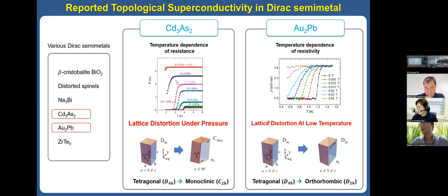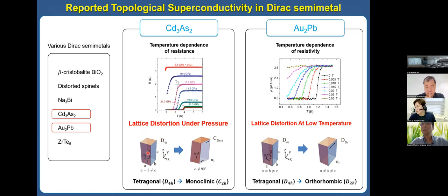Interestingly, in the Au₂Pb system at higher temperature, the system is tetragonal and shows Dirac semimetal behavior. But at lower temperature, it is elongated along one direction and becomes orthorhombic, and then it shows superconductivity. For cadmium arsenide at ambient pressure, it shows Dirac semimetal behavior with a tetragonal system. But under pressure, there is a structural phase transition from tetragonal to monoclinic.